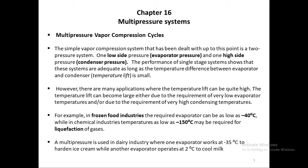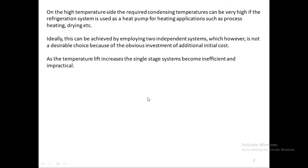For example, in the dairy industry you need one evaporator at minus 35 degrees centigrade to harden ice cream and another at 2 degrees centigrade to cool milk. Ideally this can be achieved by employing two independent systems, but that is not desirable because of the higher initial cost. As the temperature lift increases, the single-stage system becomes inefficient and impractical.